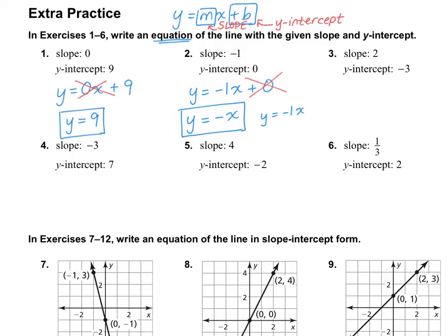Number 3: y equals — the slope is 2, so it'll be 2x — and the y-intercept is negative 3, so we put minus 3. Some people write 2x plus a negative 3, which is fine, but it's not as neat and simple as just minus 3. So it's better to write it as y equals 2x minus 3.